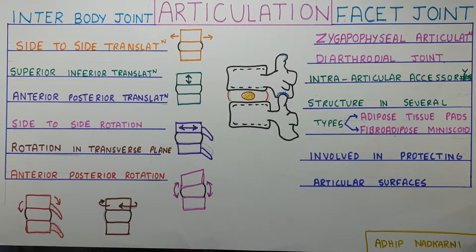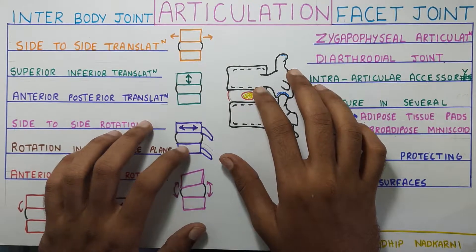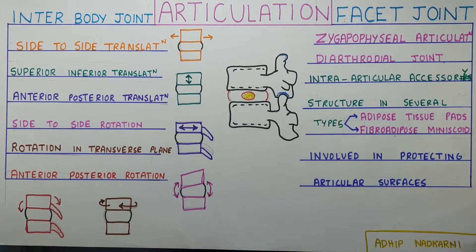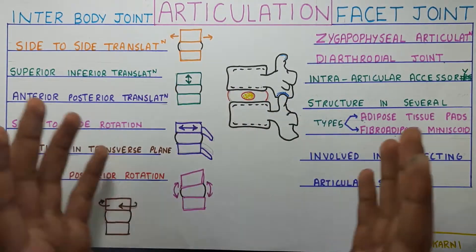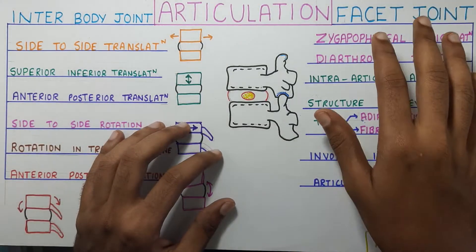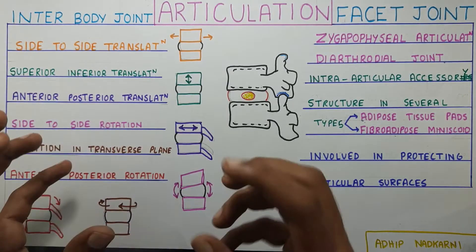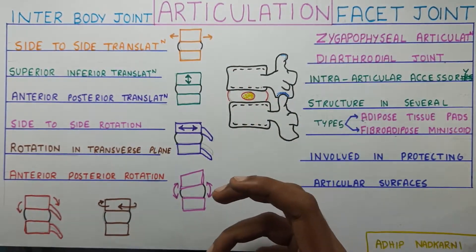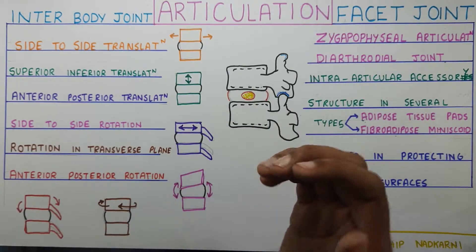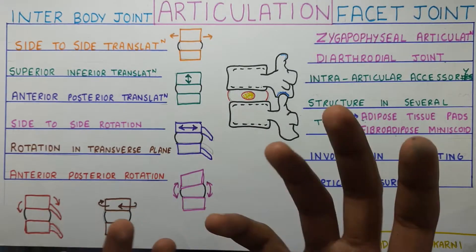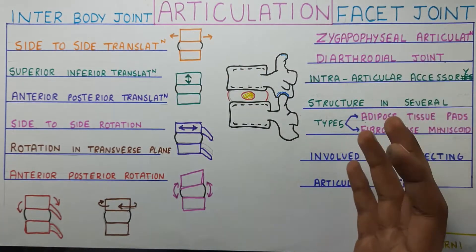In this video, we are going to talk about the articulation at the vertebra. It is going to be a very short video. Articulation at the vertebra can be seen in two types: there is the facet joint articulation, and then there is the interbody articulation where the body of the vertebra articulates. The disc is present in between but we still consider it as an articulation. So let's start with the facet joint.